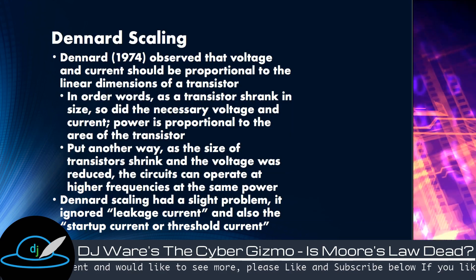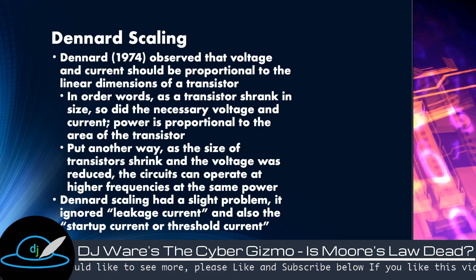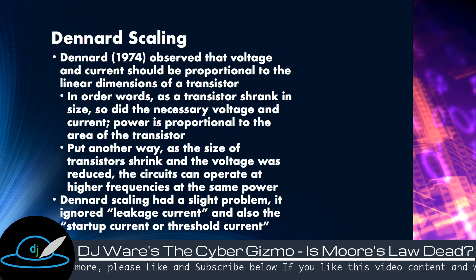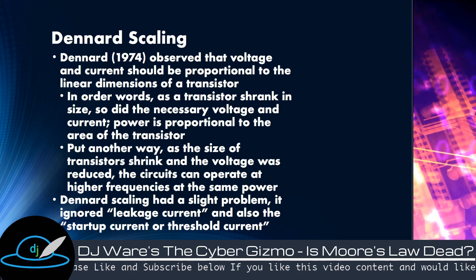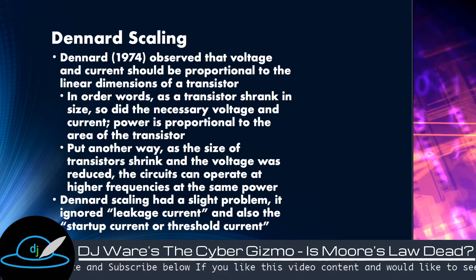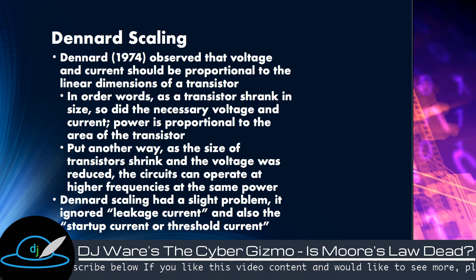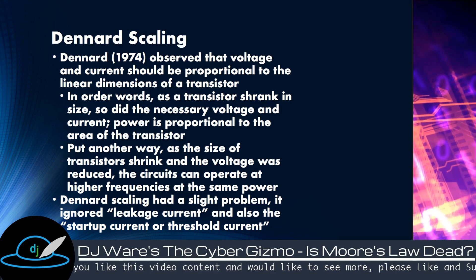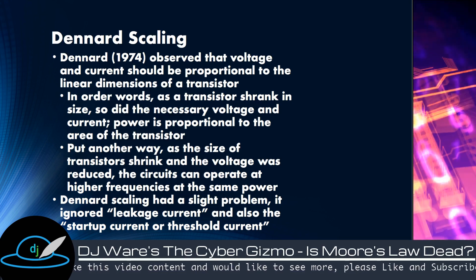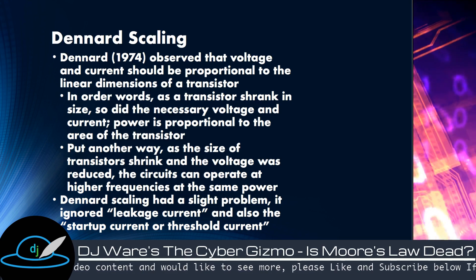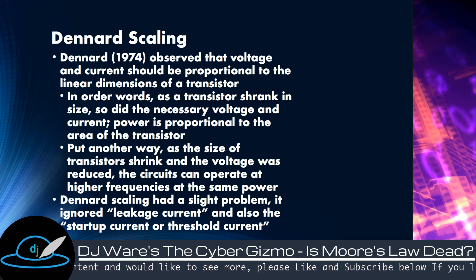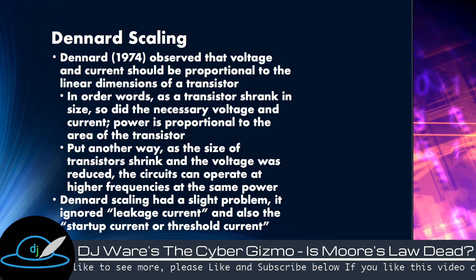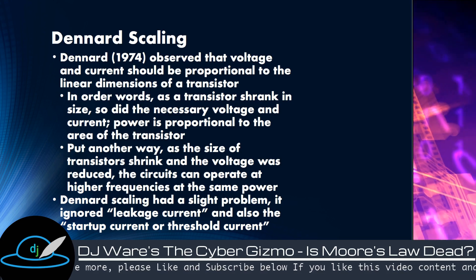The major contributor to performance was Dennard scaling. In 1974, an IBMer named Dennard observed that the voltage and current would be proportional to the dimensions of the transistor. In other words, as you shrank the transistor, the power needed to turn it on and off was less in proportion to its size. So if you wanted more speed out of the transistor, all you did was bring the voltage up — overclockers know that: bring the voltage up and you can increase the clock rate.